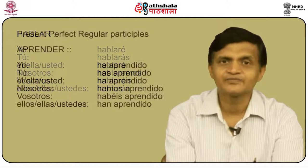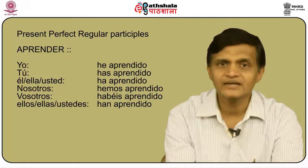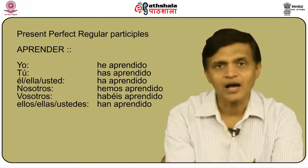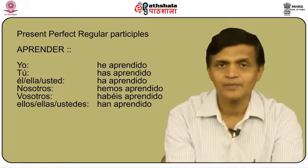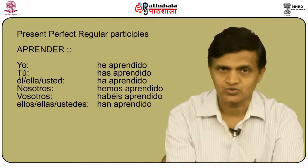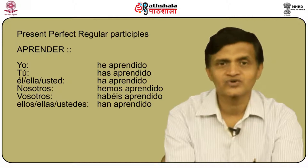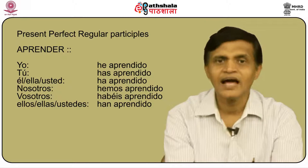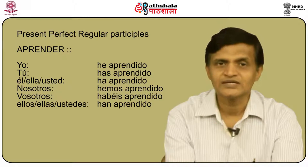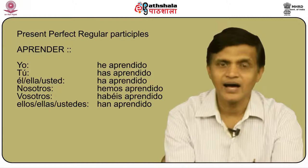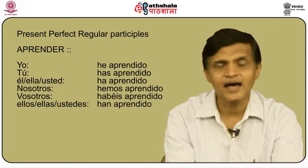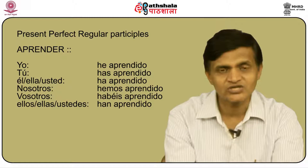Now let us look at the present perfect with regular past participles. For example, aprender: yo he aprendido, tú has aprendido, él/ella/usted ha aprendido, nosotros hemos aprendido, vosotros habéis aprendido, and ellos/ellas/ustedes han aprendido. The pattern to remember: the conjugation of haber is he, has, ha, hemos, habéis, han — and then for AR verbs remove the AR and put ADO, for ER/IR verbs remove ER/IR and put IDO.